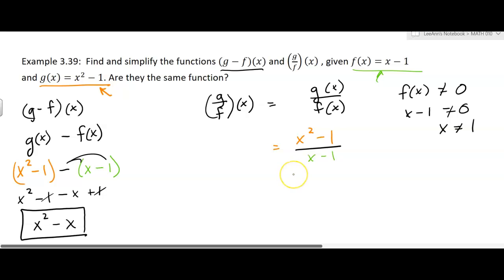Now, we can simplify this. The numerator factors into x plus 1 and x minus 1. And so we get those x minus 1s to cancel, and we get x plus 1.